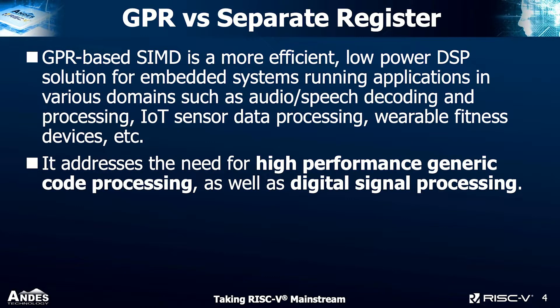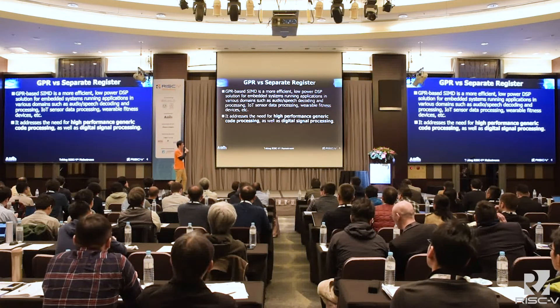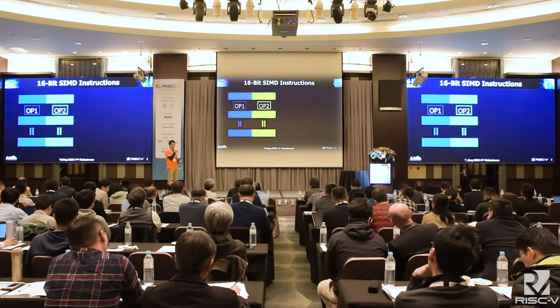Why do we use GPR instead of a separate register state? We chose this approach because we think it is a more efficient and lower power solution for embedded systems running applications in various domains such as audio, speech processing, IoT sensor data processing, wearable devices, etc. We think this is the right approach to address the need for high-performance general code processing as well as digital signal processing in those domains.